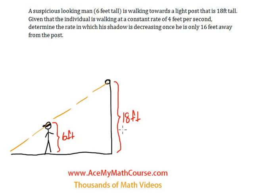Given that the individual is walking at a constant rate of 4 feet per second, determine the rate at which his shadow is decreasing once he is only 16 feet away from the post.